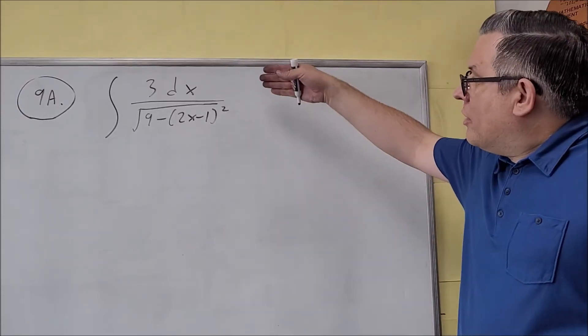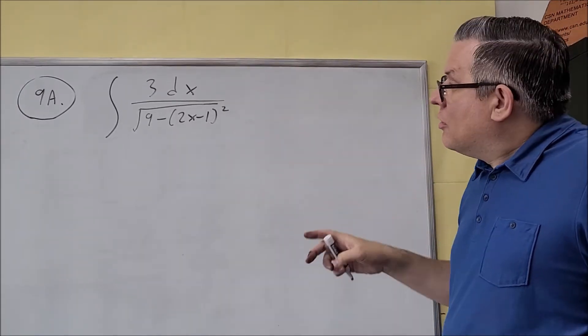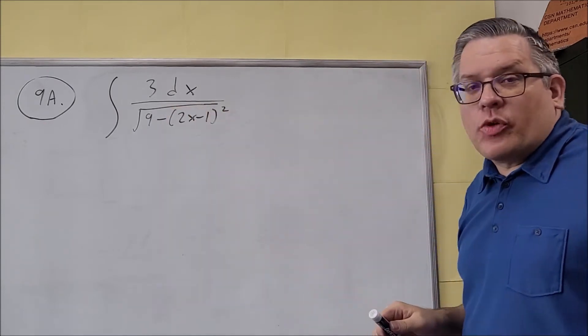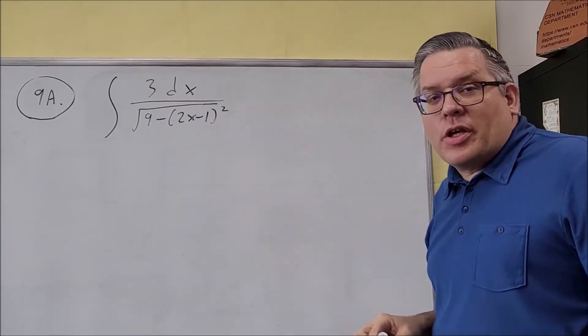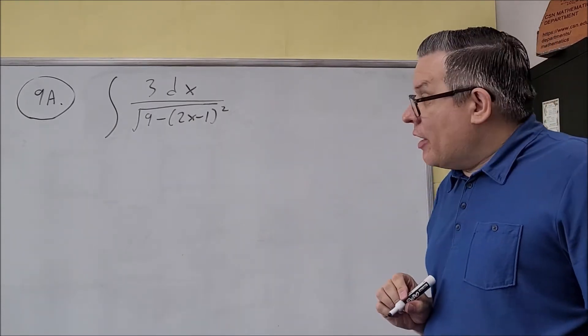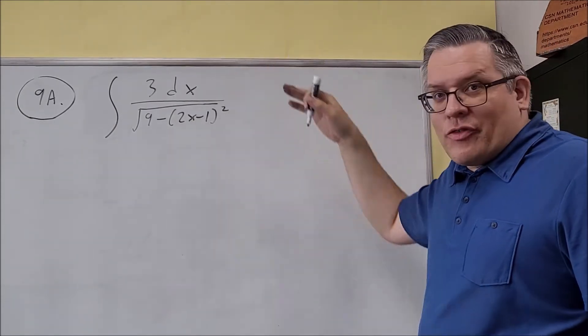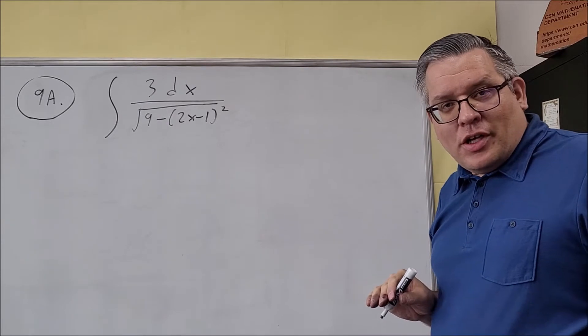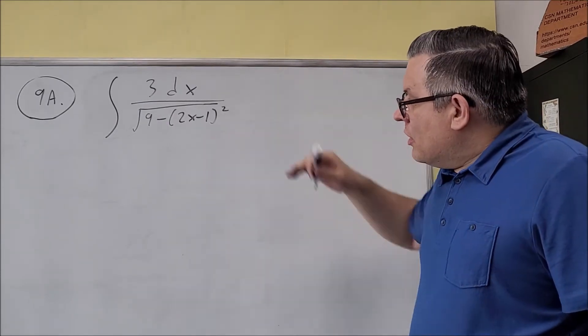Now for this one, if you take a look at the format of this, we have a square root and it looks like we have something squared minus something else squared. So you should be looking at your anti-derivative formulas and thinking that you should be using some kind of an inverse trig function. And that's exactly what we're going to be using on this problem.